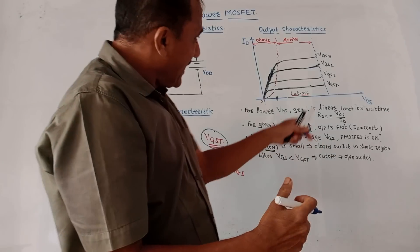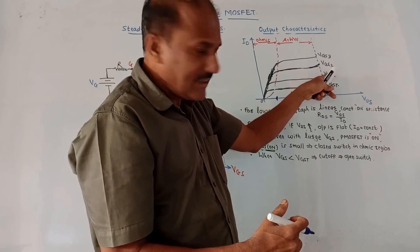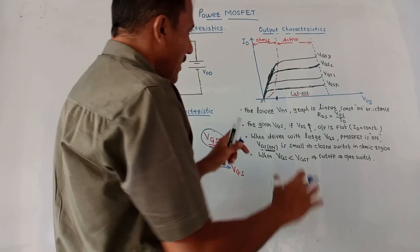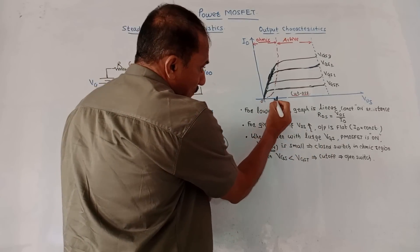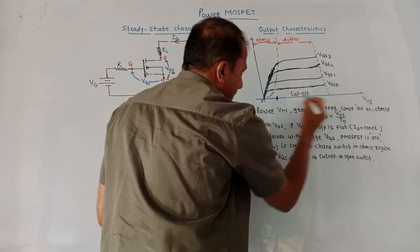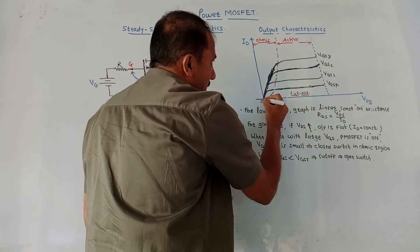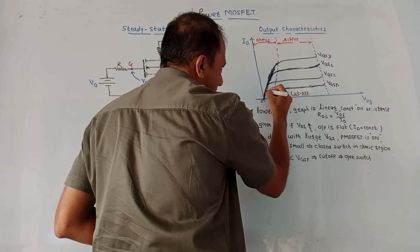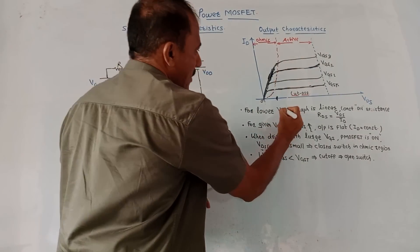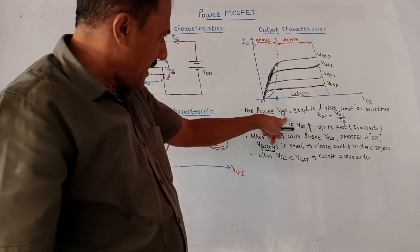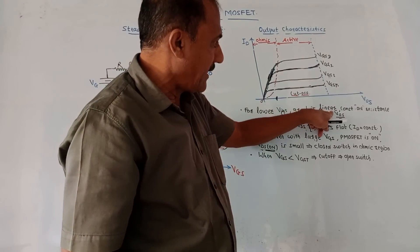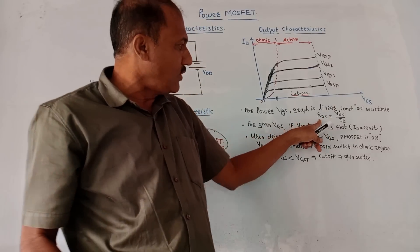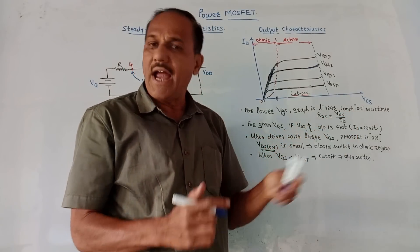For any value of VGS, if you are talking about the lower range of VDS, the value of ID increases linearly. So for lower VDS, the graph is linear and you get a constant on-resistance. This value is RDS, which equals VDS divided by ID. Since ID increases linearly, you get a constant resistance, and any resistance is basically voltage upon current — so RDS equals VDS divided by ID.